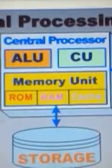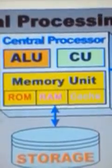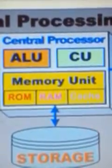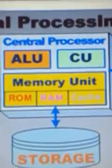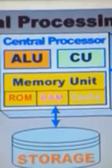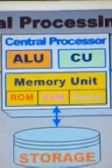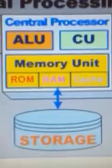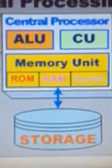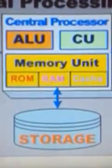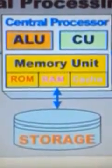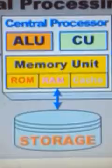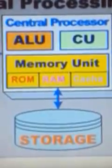At the bottom right there is cache memory, which is used to speed up the transfer of instructions. It is the memory nearest to the microprocessor.